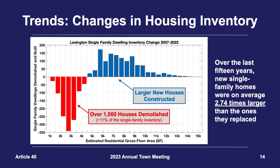An analysis was undertaken that compared Lexington's entire single-family housing inventory as it was built in 2007 to the as-built inventory in 2022. Through this analysis we can compare what housing was removed through demolition and what replaced it through new construction. The plot on the slide represents the change in that inventory, with the red bars denoting the number of single-family homes demolished and the blue bars denoting the number of new houses constructed. Over 1,000 homes — roughly 11% of the entire single-family inventory — has been replaced in the last 15 years, and smaller houses were replaced by a wide spectrum of larger houses. Over this entire period, new single-family houses were on average 2.7 times larger than the ones they replaced.